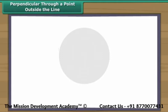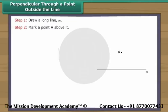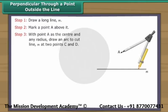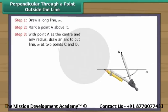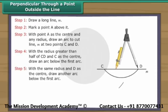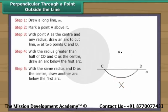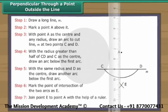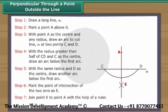Perpendicular through a point outside the line. Draw a long line M and mark a point A above it. With point A as the center and any radius, draw an arc to cut line M at two points C and D. With a radius greater than half of CD and C as the center, draw an arc below the first arc. With the same radius and D as the center, draw another arc below the first arc. Mark the point of intersection of the two arcs as E. Join point E to point A. AE is perpendicular to line M.